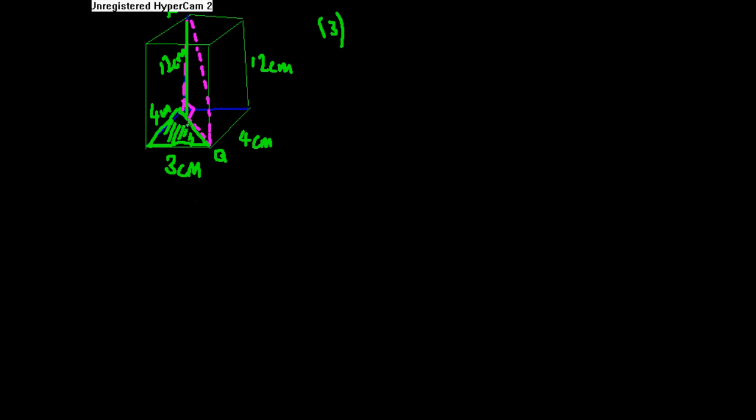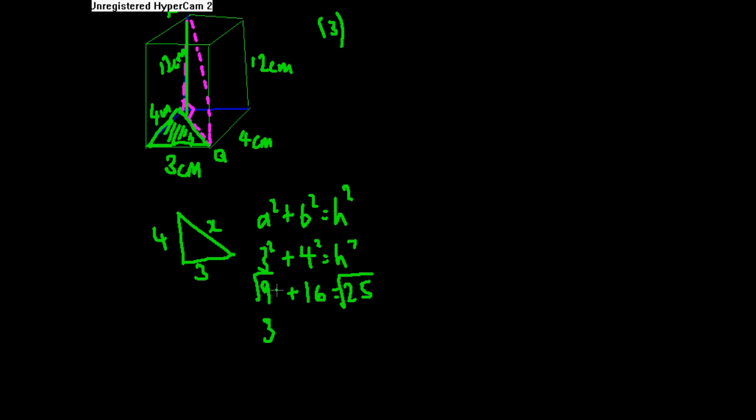We've got a triangle there, so if we draw this out nicely here, that's 3 and that's 4 and that's going to be x. This is simple Pythagoras now. We know a squared plus b squared equals h squared. So 3 squared plus 4 squared equals h squared. That's going to be 9 plus 16 equals 25, and we square root this and get 5. Of course, 3 plus 4 equals 5, and we've got this length now.